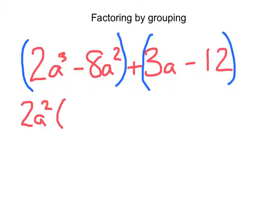Now I just need to make sure that what I'm writing out is equivalent to the first two terms in the parentheses. So a times a would give me a³, and then -4 is going to give me that -8a².